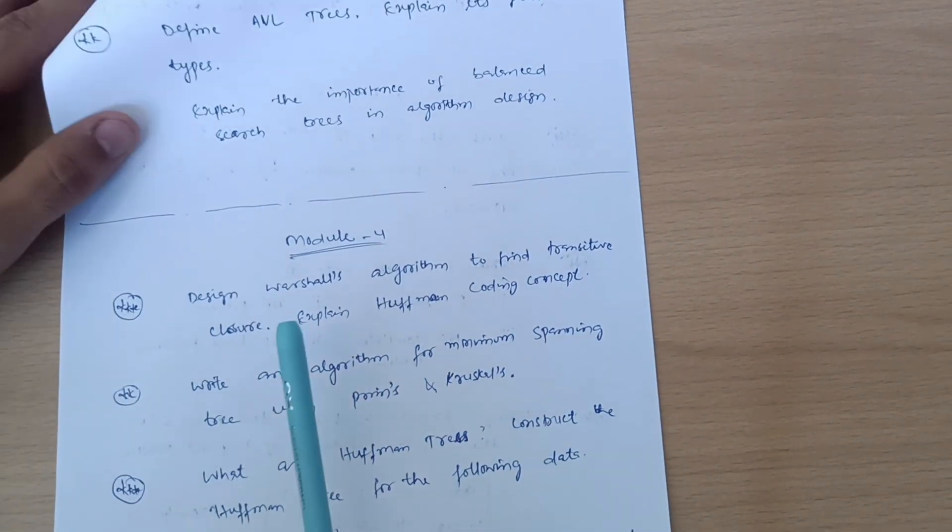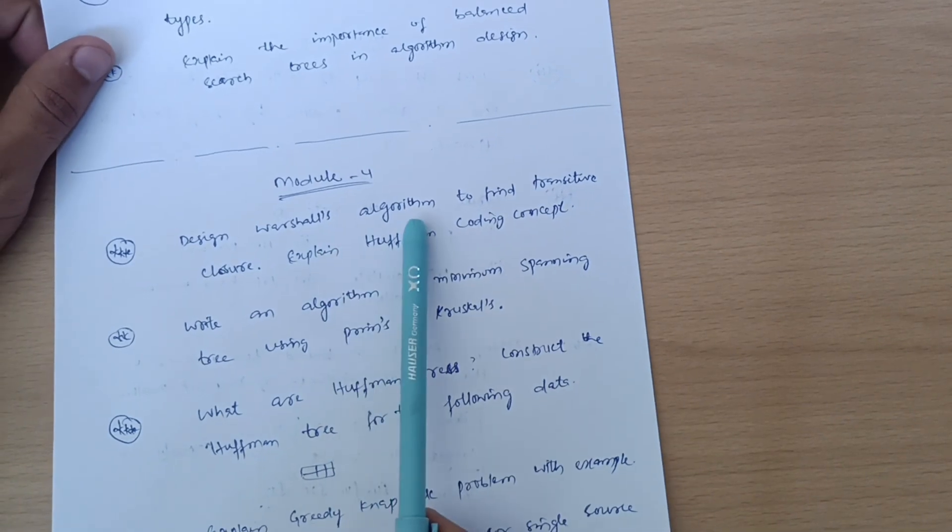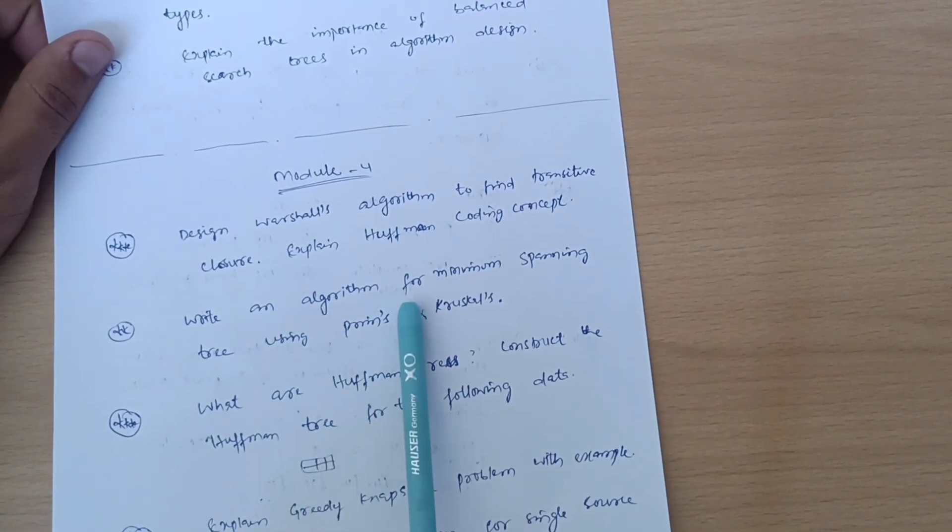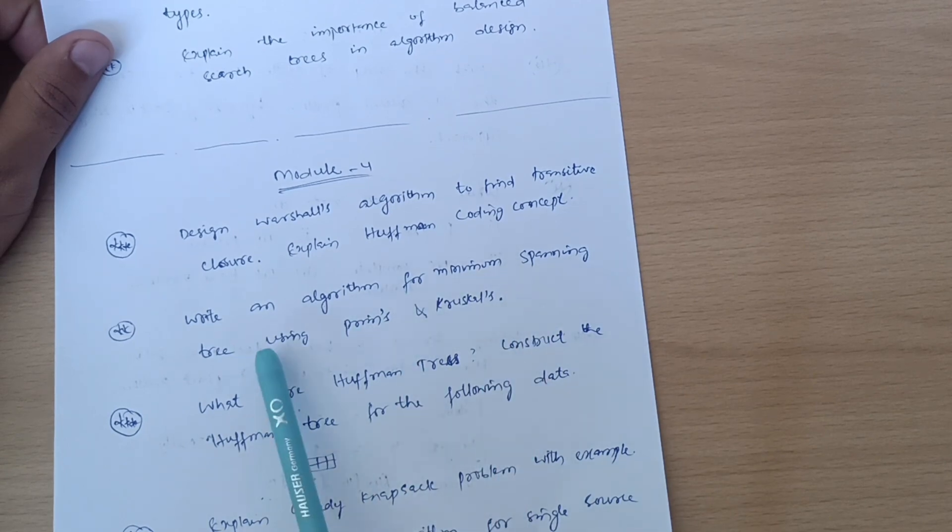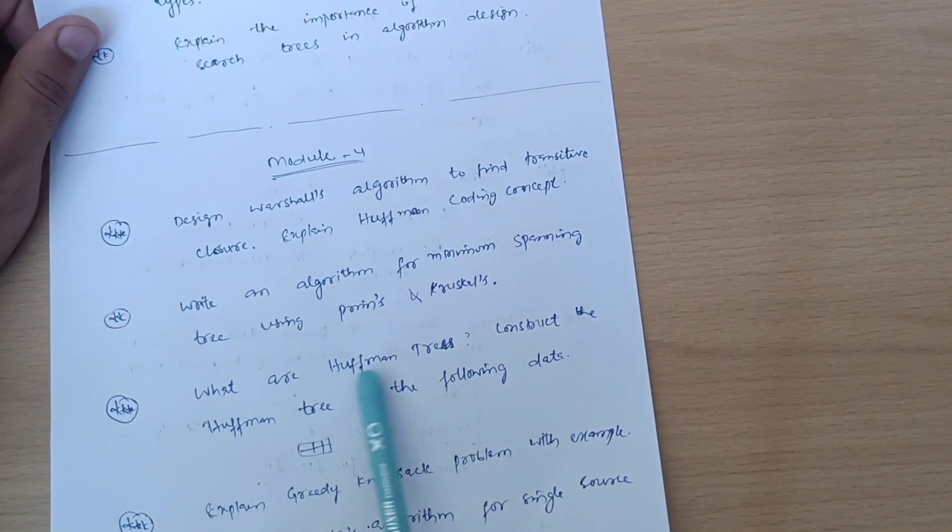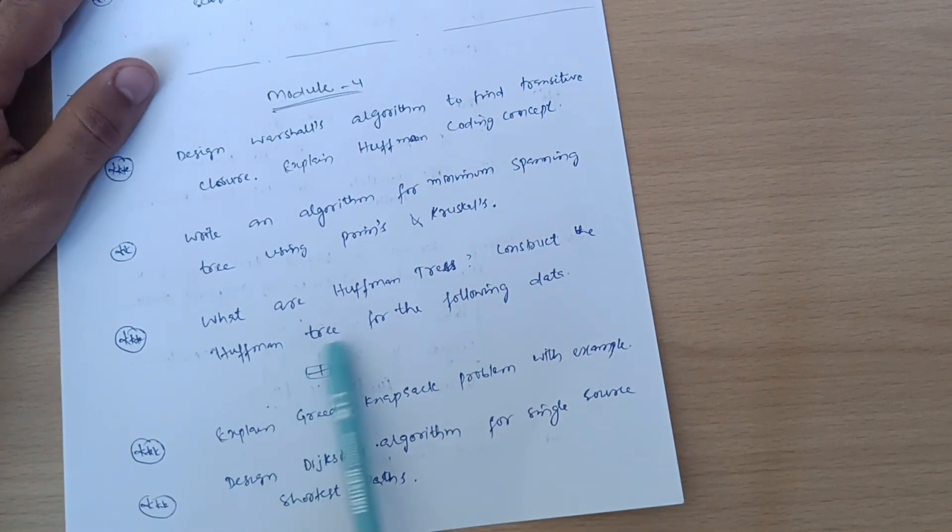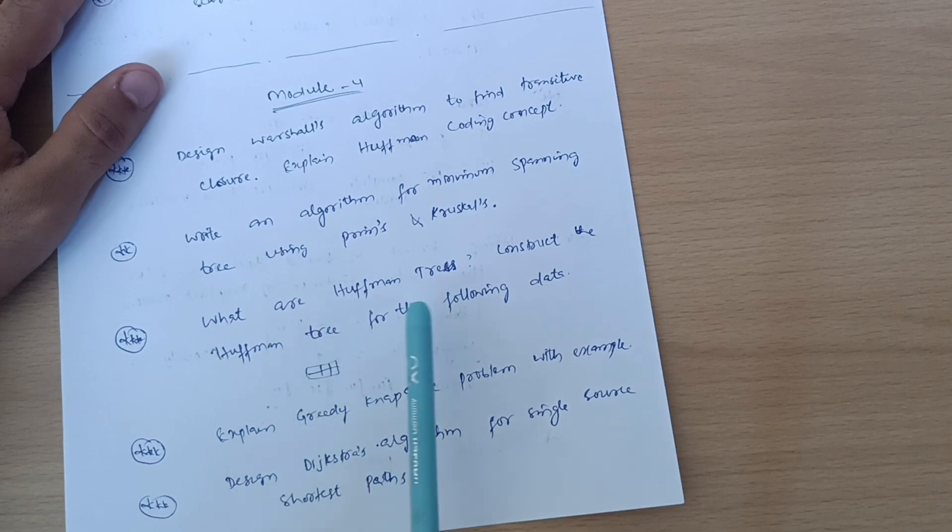Let's talk about Module 4: Design Warshall's algorithm to find transitive closure, explain Huffman coding concept, write an algorithm for minimum spanning tree using Prim's and Kruskal's algorithm. What are Huffman trees? Construct the Huffman tree for the following data, so your data will be given in the box.